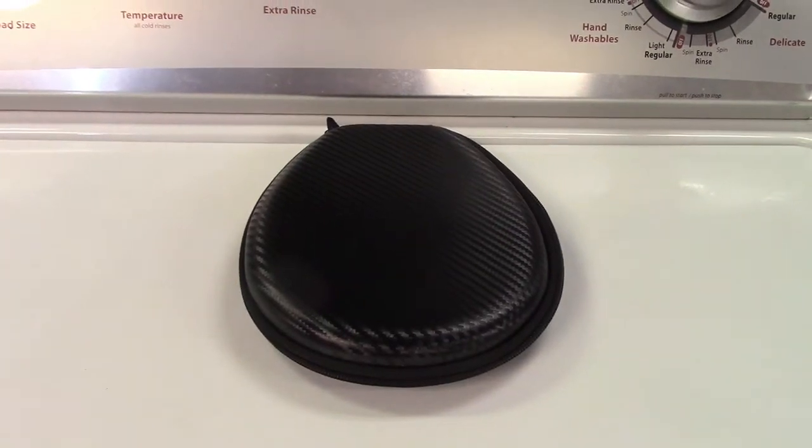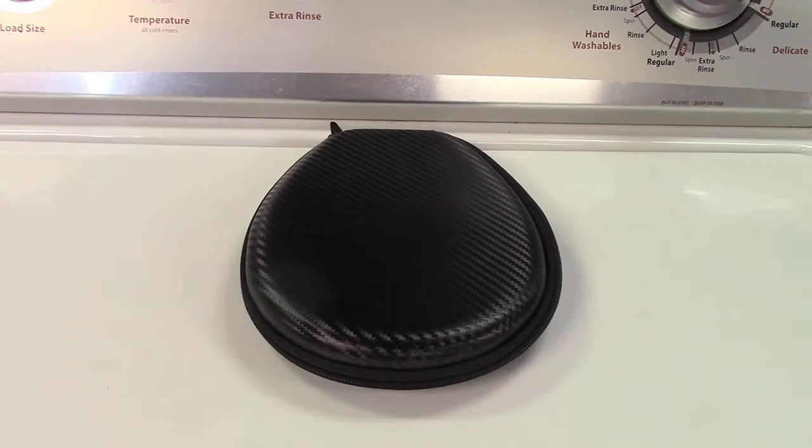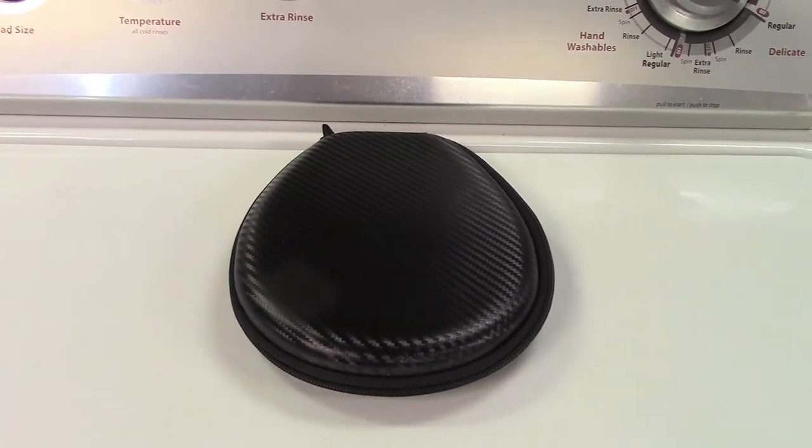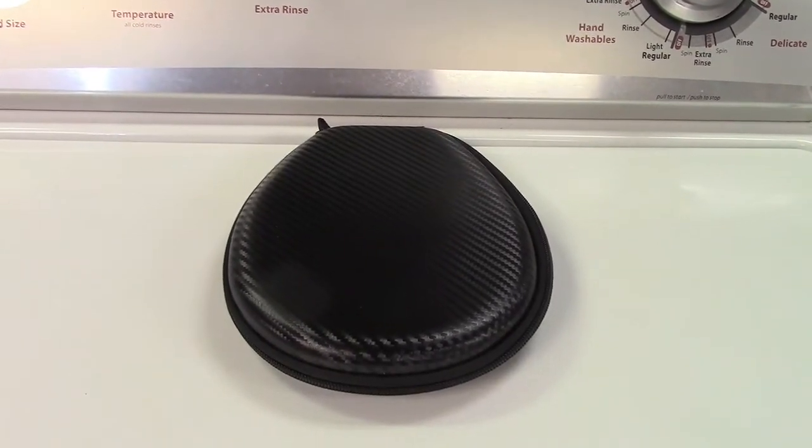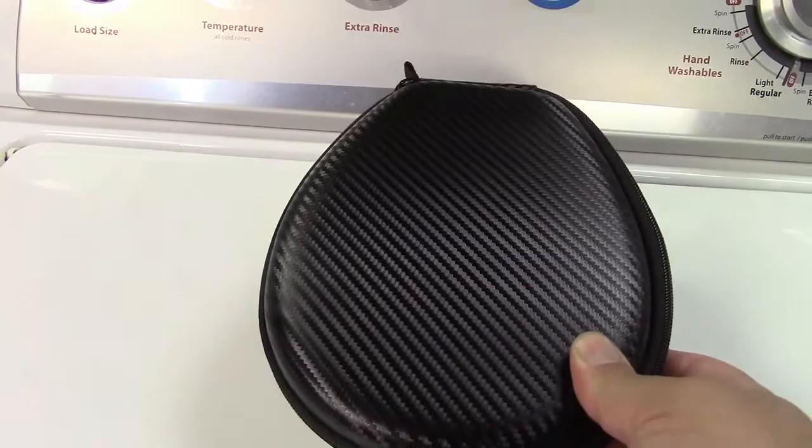This is the Mini Diva Neckband Hearing Amplifier. It doesn't come in any kind of fancy box, it just came in a padded envelope, but of course you do get the nice case here that everything is contained within, so let's go open that up.